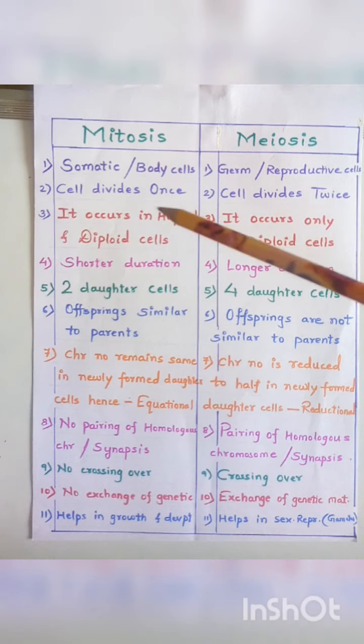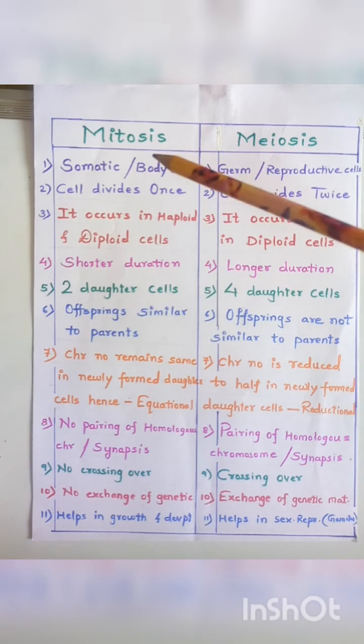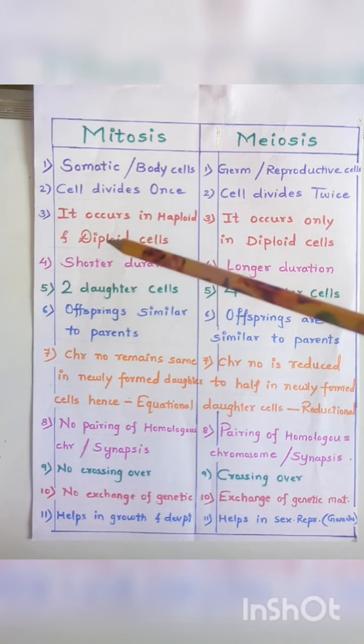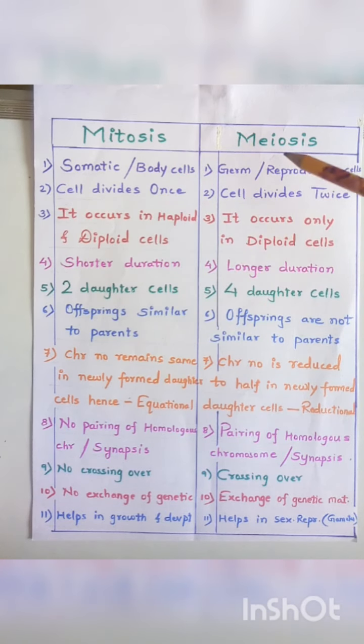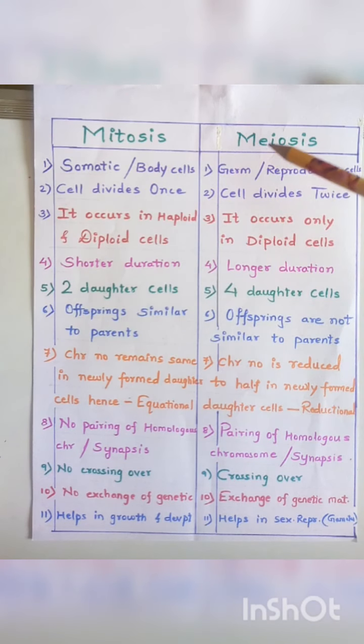In which cells does this cell division take place? Mitosis occurs in both haploid and diploid cells, whereas meiosis occurs only in diploid cells. The time taken for mitosis is short compared to meiosis — mitosis is of shorter duration.